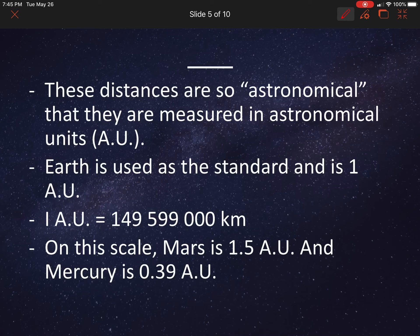So these distances are so astronomical that they're measured in what's called astronomical units, AUs. Remember that Earth is used as the standard and is 1 AU. So what is an AU? We can say it's the distance from the sun to the Earth. And I think we actually talked about this in the very first lesson for this unit. So distance from the sun to our planet Earth. Now 1 AU is going to be equal to 149,599,000 kilometers. So that's huge. On this scale, Mars is 1.5 AU and Mercury is 0.39.